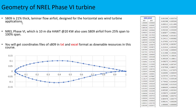As far as geometry of the NREL Phase 6 is concerned, it is based on the S809 aerofoil. This is a 21% thick aluminum aerofoil designed specially for the horizontal axis wind turbine by the NREL. The NREL Phase 6 wind turbine is approximately 10 meters in diameter — exactly 10.058 meters — with a maximum power rating of 20 kilowatts. It uses the S809 aerofoil from 25% span to 100% span.